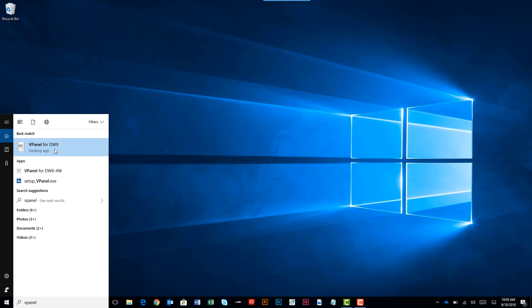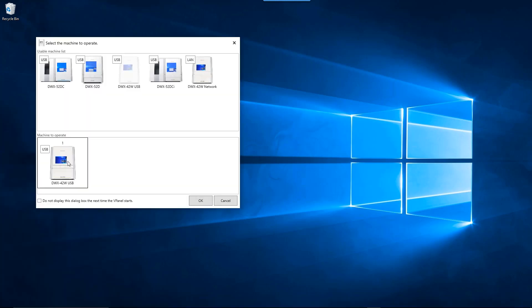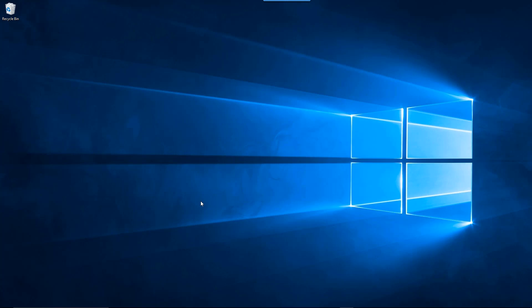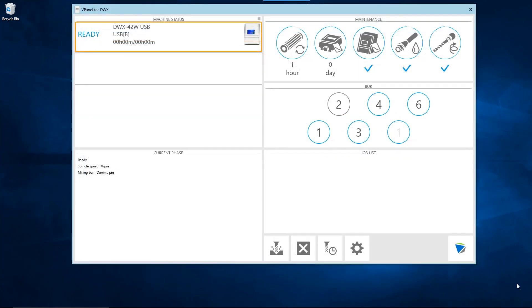Open the panel on your computer. When the machine selection screen appears, select the DWX42W and click the OK button. Once the vPanel home screen appears, click on the Replace Coolant button.